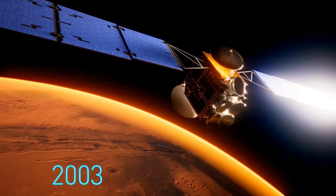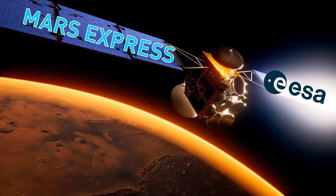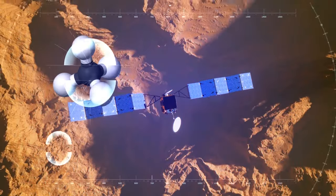But Enceladus and the other icy moons aren't the only place in the solar system that might host or once hosted life. In 2003, Mars Express, a spacecraft launched by the European Space Agency, discovered methane in the atmosphere of Mars.